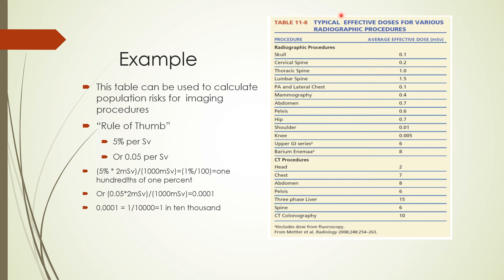Let's look at an example. For CT head procedures on this table where the average dose is 2 mSv, we can calculate population risk by multiplying 2 mSv by 5% per sievert. This gives us a risk estimate of fatal cancer induction of 1 hundredth of 1% above the natural incidence. If on the other hand we want to use 0.05 per sievert, we will first divide 0.05 by 1,000 to convert to 0.05 per 1,000 mSv, then multiply by 2 mSv. This gives us 0.0001, and we can invert that to get 1 in 10,000 as the risk estimate of cancer induction.